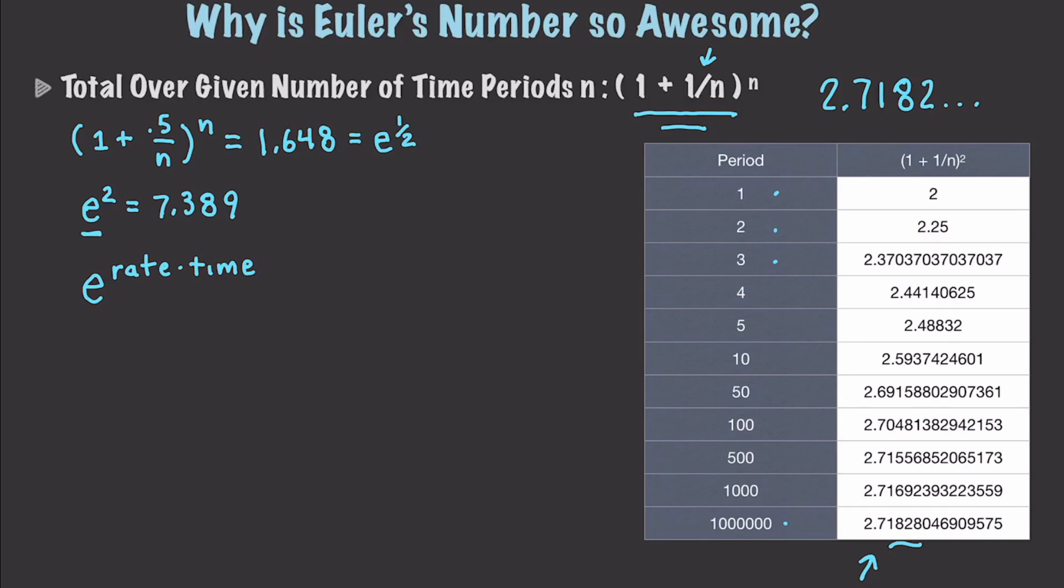So, if we wanted to find out, if we would earn 100% after a year, how much would we have after 6 months? What we would do is we would say e to the 1, representing 100%, times 1 half. And, after 6 months, we would have $1.648. And, what about 1 and a half years? Well, we could just take e to the 1.5, and that would give us $4.48.